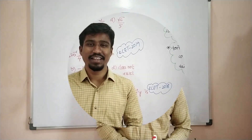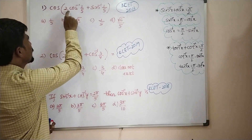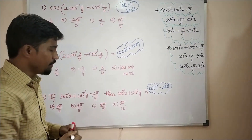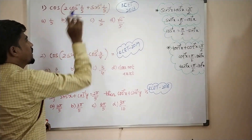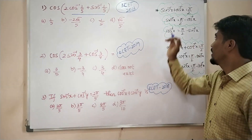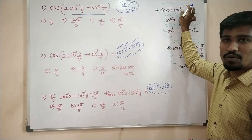What is the first question? I am going to say: cos of (cos⁻¹(1/5) + sin⁻¹(1/5)). There is a very important property: sin⁻¹x + cos⁻¹x = π/2.